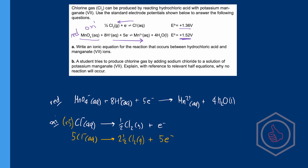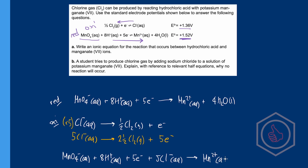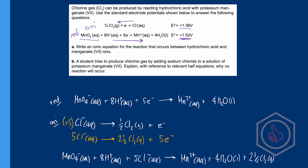If we combine these two half equations together, we end up with MnO4- + 8H+ + 5Cl- on the left. Notice that the 5e- on both sides can be cancelled out, leaving us with: MnO4- + 8H+ + 5Cl- → Mn2+ + 4H2O + 2½Cl2.